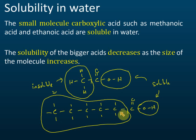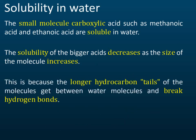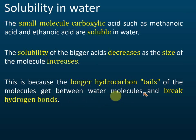So if the carbon chain becomes very long, the solubility drops and the carboxylic acid becomes insoluble. The bigger the molecule, the lower the solubility. This is because the longer hydrocarbon tail gets between water molecules and breaks the hydrogen bonds.